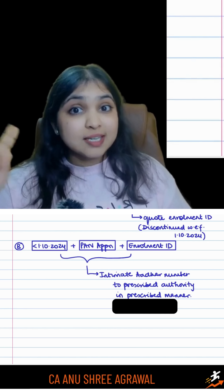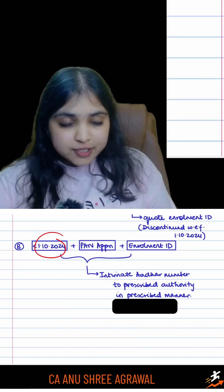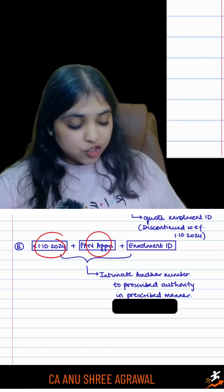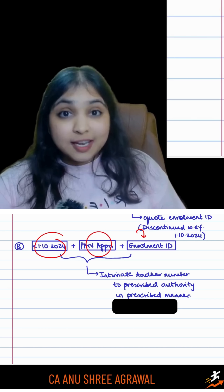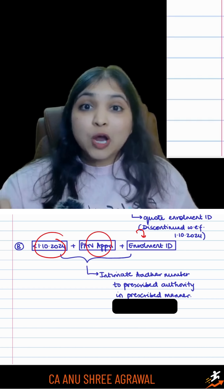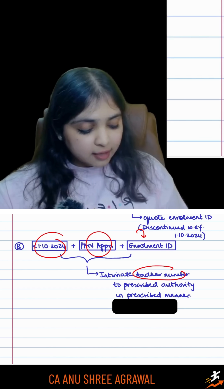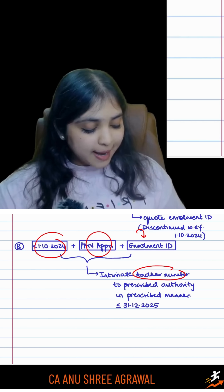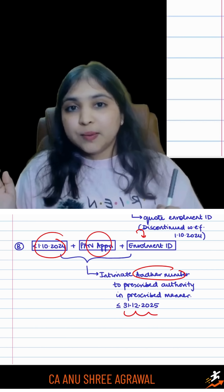So, those Assessees who, before 1st October 2024, quoted their enrollment ID in their PAN application, such Assessees now have to intimate their Aadhaar number to the prescribed authority by 31st December 2025.